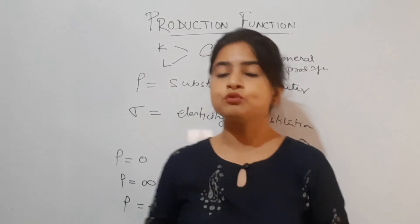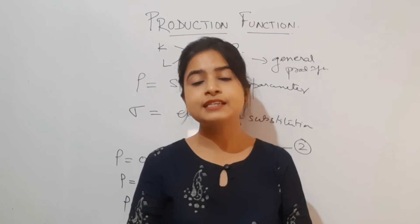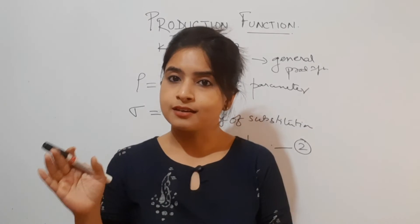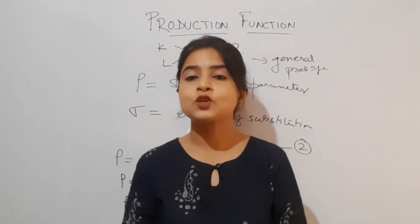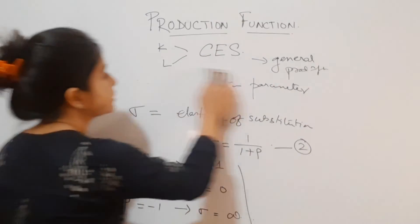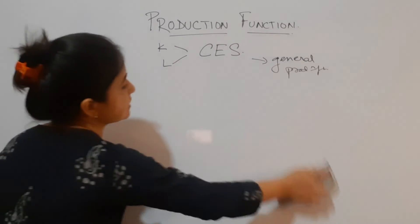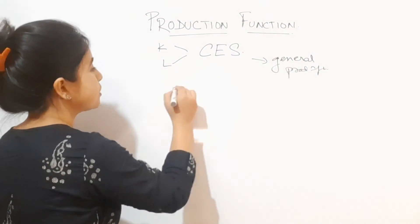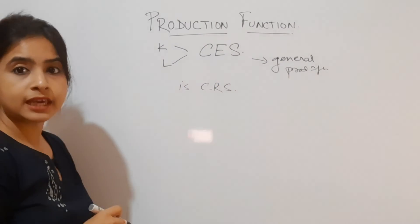Let me also walk you through one very important characteristic of the CES production function: it is a homogeneous production function of degree 1. This means it exhibits constant returns to scale. So the CES production function is CRS — constant returns to scale.